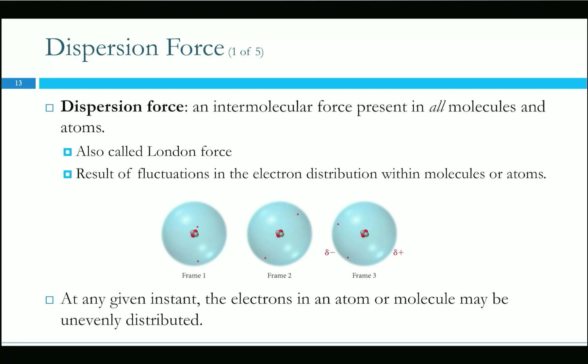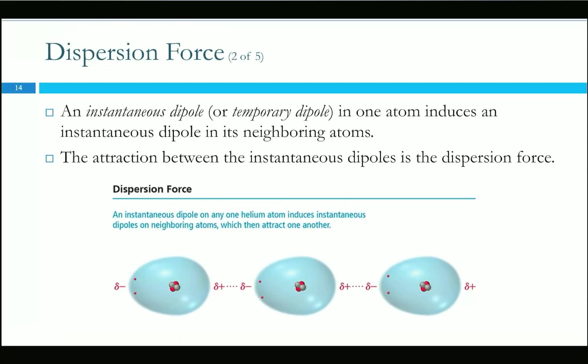The dispersion force results from fluctuating electron distributions within atoms or molecules. In frame one, electrons are on opposite sides of the nucleus. In frame three, for an instant they're on the same side — meaning the negative charge of the atom is concentrated on one side and the other side becomes positive. In frame four that goes away. It's instantaneous, existing for just a moment, which is why everything can have dispersion forces — because everything has electrons.